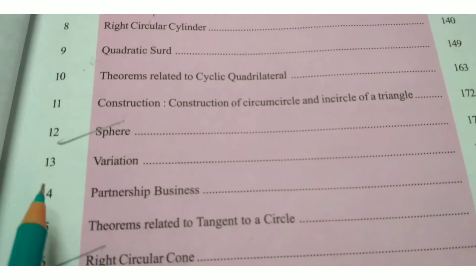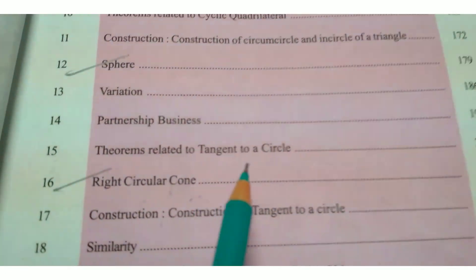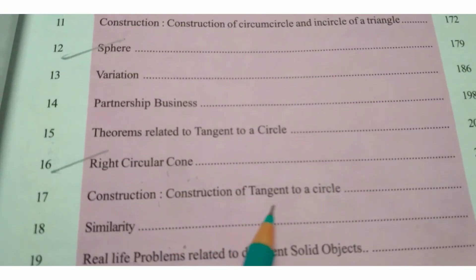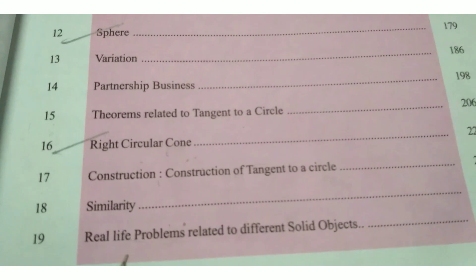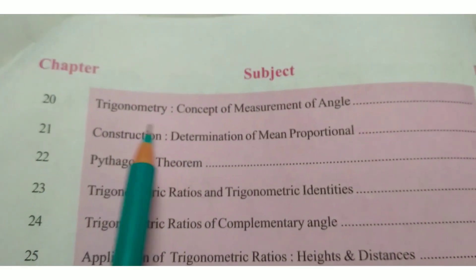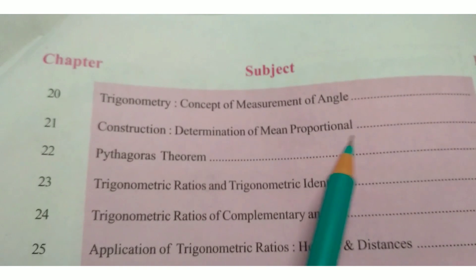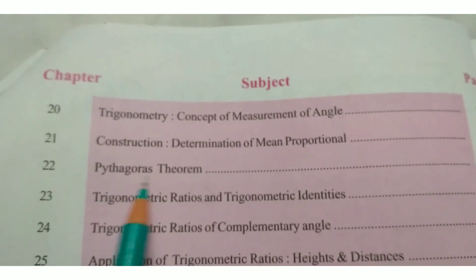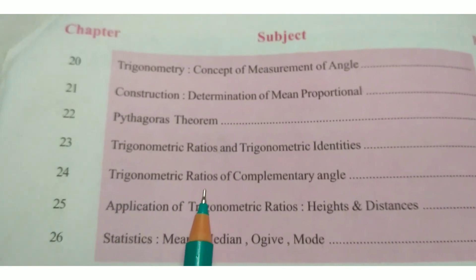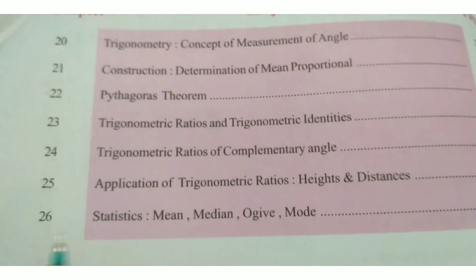Chapter 12: Sphere. Chapter 13: Variation. Chapter 14: Partnership Business. Chapter 15: Theorems Related to Tangent to a Circle. Chapter 16: Right Circular Cone. Chapter 17: Constructions of Tangent to a Circle. Chapter 18: Similarity. Chapter 19: Real Life Problems Related to Different Solid Objects. Chapter 20: Trigonometry — Concept of Measurement of Angle. Chapter 21: Construction — Determination of Mean Proportional. Chapter 22: Pythagoras Theorem. Chapter 23: Trigonometric Ratios and Trigonometric Identities. Chapter 24: Trigonometric Ratios of Complementary Angle. Chapter 25: Application of Trigonometric Ratios — Heights and Distances. Chapter 26: Statistics —